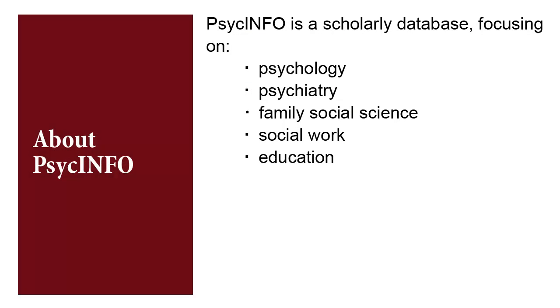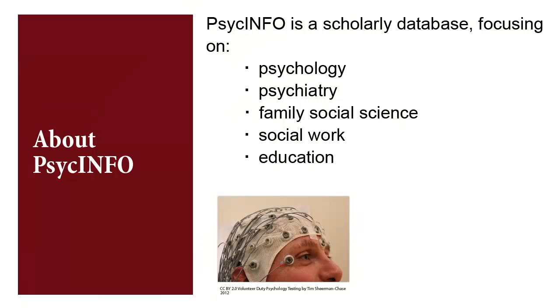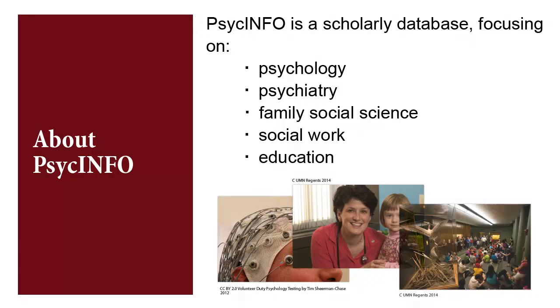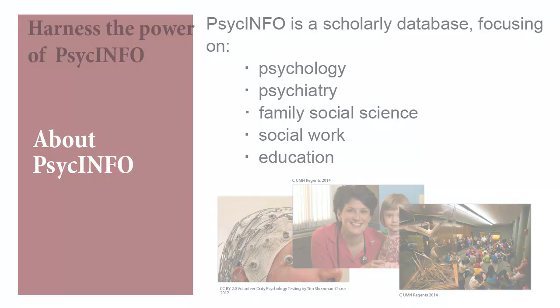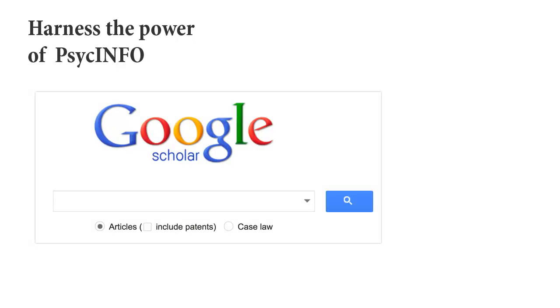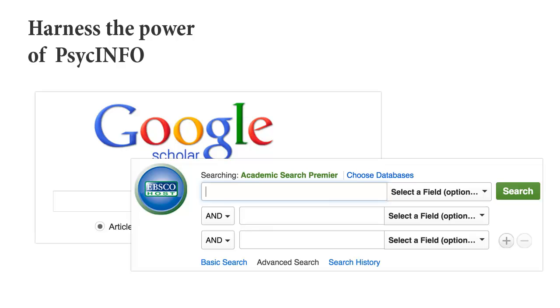PsychInfo is a database that features millions of scholarly records devoted to the behavioral sciences including psychology, psychiatry, family social science, social work, and education. PsychInfo has breadth and depth, which can make it particularly difficult to search if you don't know the tricks. Searching PsychInfo as you would Google Scholar or Academic Search Premier is unlikely to help you find the articles you need for your work.